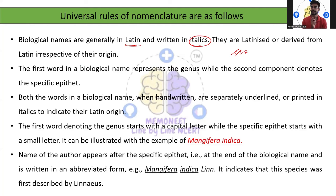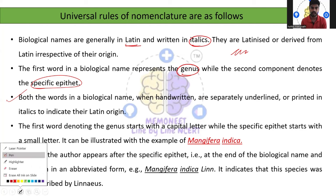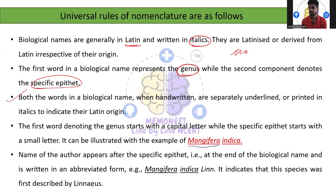The second rule: the first word of the biological name always represents the genus name, while the second component always denotes the specific epithet or species name. The third rule: both words of the biological name, when written, need to be underlined separately — for example, Mangifera underlined separately and Indica underlined separately. While printing, it should be in italics form, indicating they are of Latin origin.